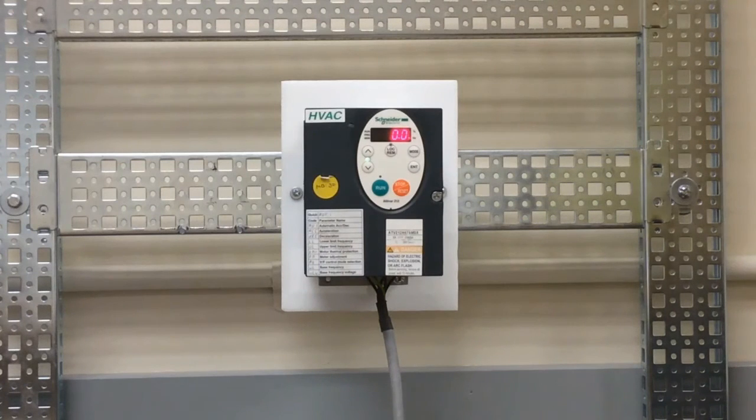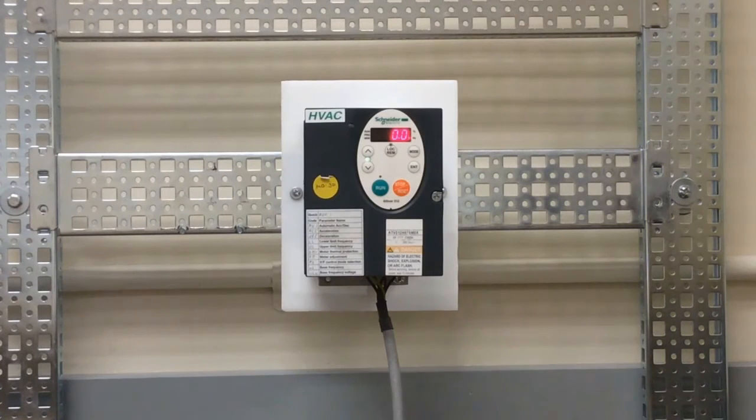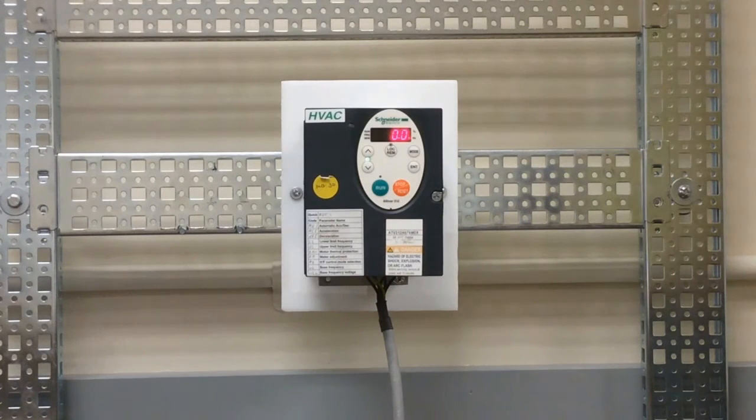So if you want to maintain fifty PSI out of zero to one hundred, then the set point we want to set here is thirty. Thirty out of sixty is the exact same as saying fifty PSI out of one hundred PSI.